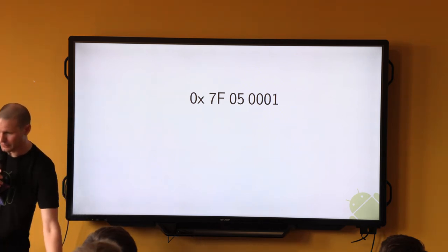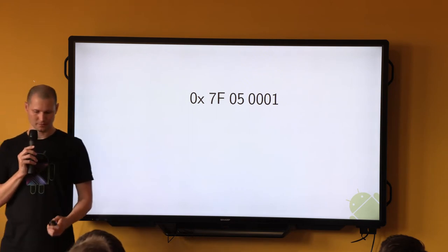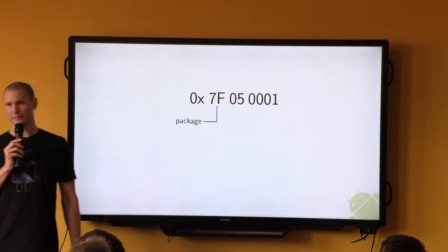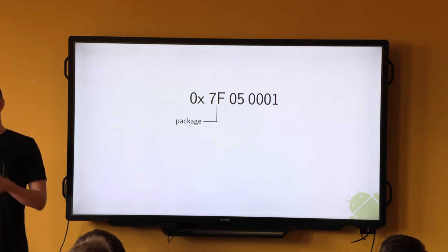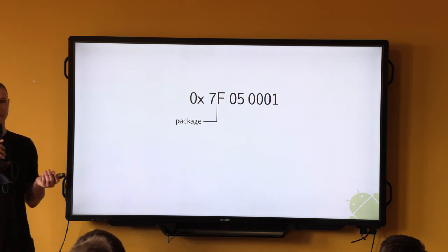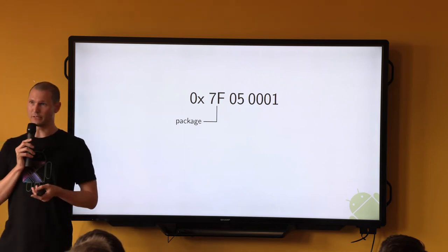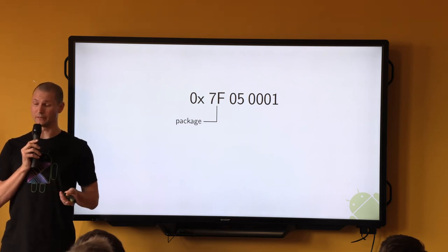A resource numerical qualifier consists of three parts. The highest bits correspond to which type of package we're looking at. 0x7f is the most commonly used value because it's used by regular applications. But there is also 0x01 for the framework, and 0x00 for shared resource libraries.